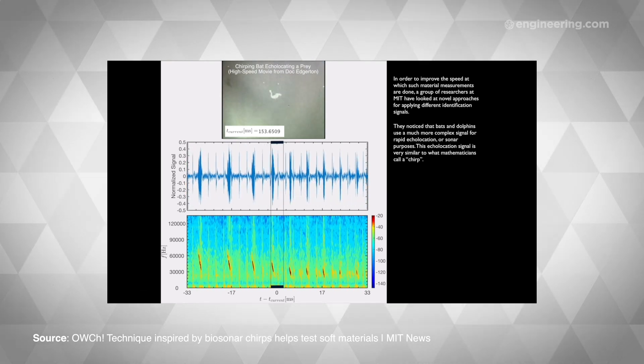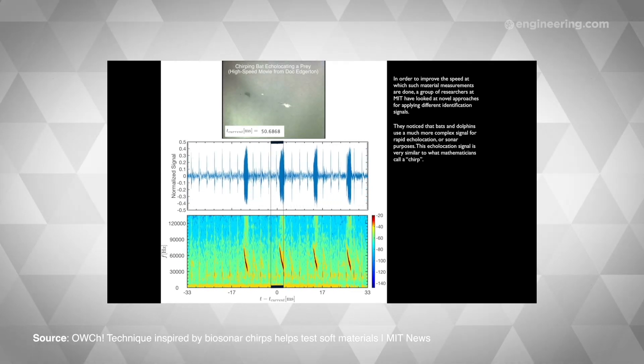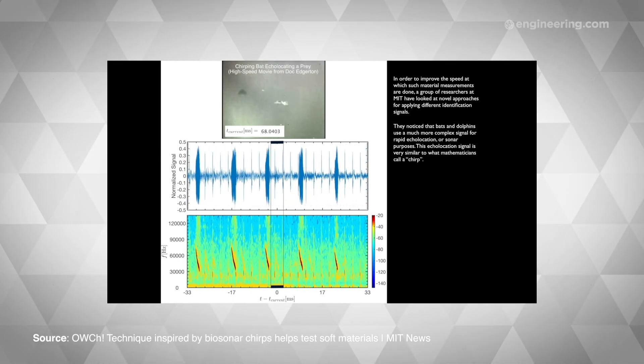By analyzing naturally occurring chirps in computer simulations, the team was able to optimize the chirp profiles for their rheometer, creating what they called optimally windowed chirps. Thanks to this little bit of biomimicry, the team was able to make measurements a hundred times more accurate than the conventional chirp method.